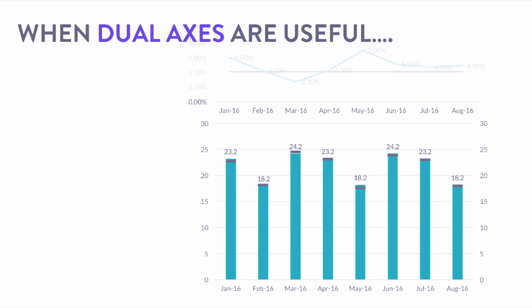Now you can see these little line markers serving as a sort of thermometer gauge — and I think it adds a little bit of extra context. What the data is saying is that we are very close to hitting our targets every month, which is good news. It's just a little extra hint you can include on the bar chart to help with interpretation.